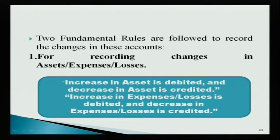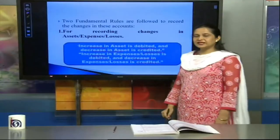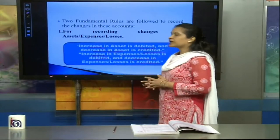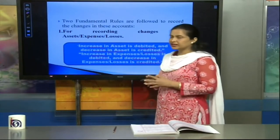Isi tarah se, jo increase expenses ya loss mein hota hai, use bhi debit karte hain, aur jo decrease hota hai expenses ya loss mein, use hum credit karte hain. Kyunki dono mein — asset mein bhi jo increase hota hai use debit kar rahe hain, aur expenses ke increase ko bhi debit kar rahe hain. Aur isi tarah se jo decrease ho raha hai asset mein, aur yahan jo decrease ho raha hai, dono ko hum credit kar rahe hain. Toh isliye hum dekh sakte hain ki yahan jo rules follow kiye ja rahe hain, woh dono ke liye same hain, isliye humne assets aur expenses ko ek saath rakha hai.